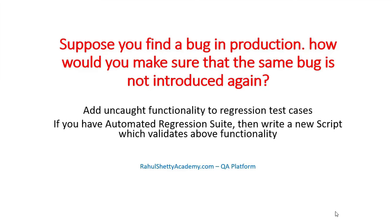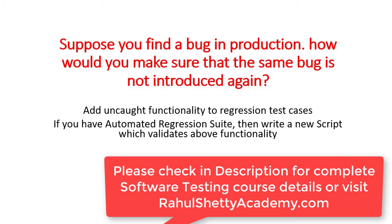Question 1: Suppose you find a bug in production. How would you make sure that the same bug is not introduced again? First of all, you should let them know that the functionality which went uncaught in your normal testing eventually showed as a bug in production. You will make sure that functionality is now covered as part of your regression testing. Before every release we do regression testing, and the bug you saw will be added as a test case in regression so that in the next release that functionality is tested every time before going to production.